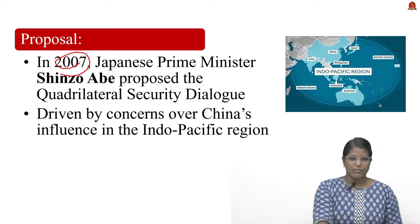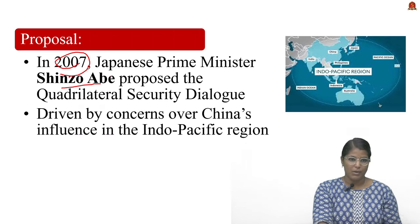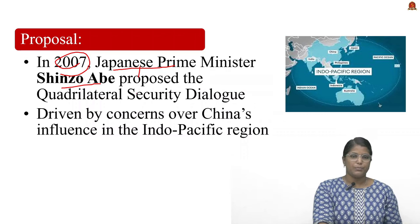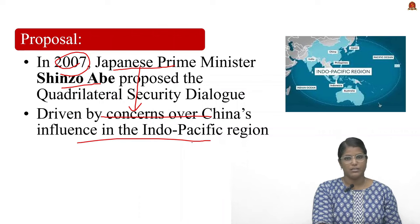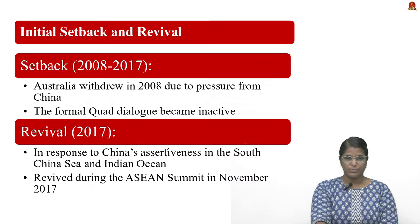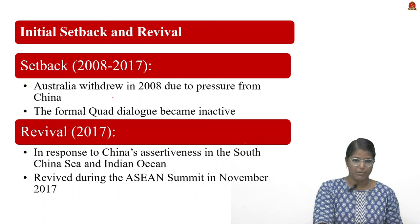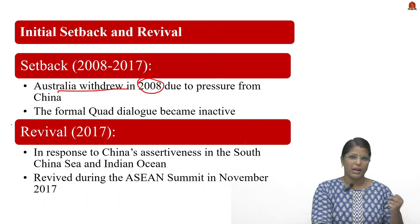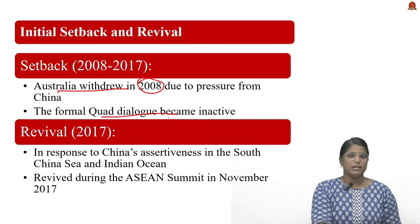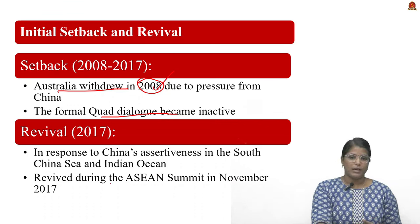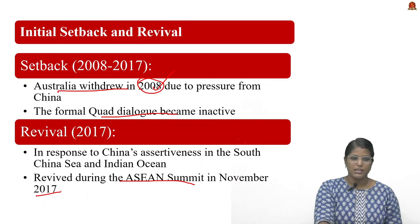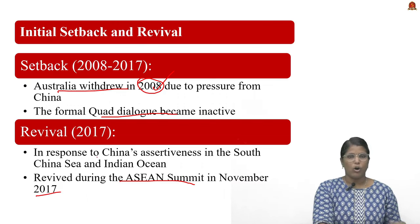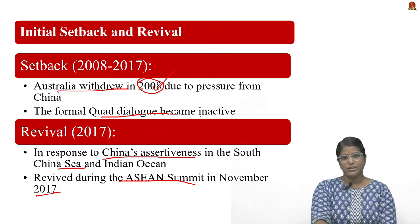In 2007, the proposal for QUAD was made by Shinzo Abe, the Japanese Prime Minister, driven by concerns over China's influence in the Indo-Pacific region. After the grouping was formed, Australia withdrew in 2008 due to pressure from China, making the formal QUAD dialogue inactive. When all four countries met again at the ASEAN Summit in November 2017, the forum was revived, with shared concerns over China's assertiveness in the South China Sea and Indian Ocean.